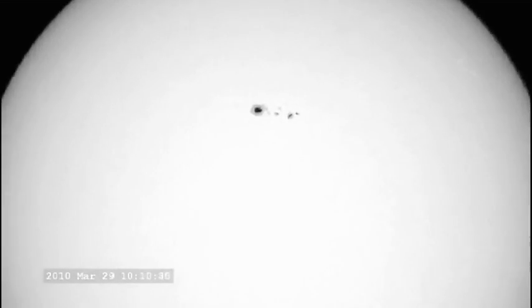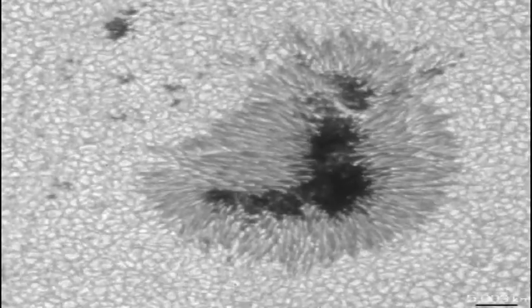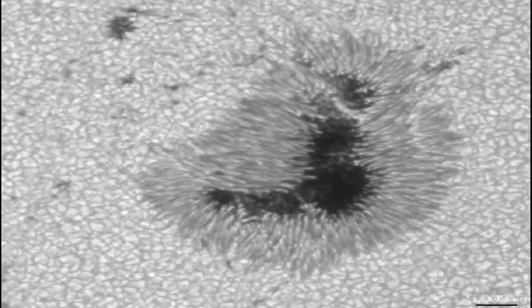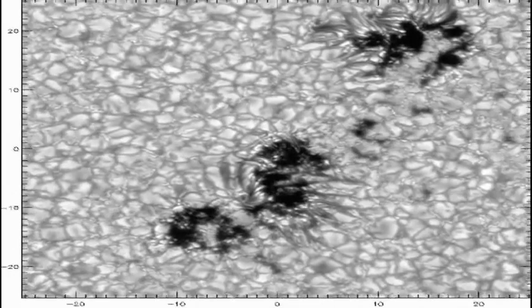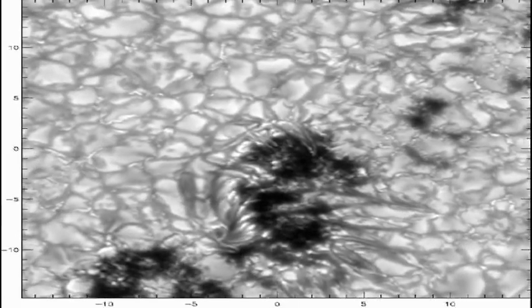Sunspots are areas of intense magnetic fields that effectively create a cold spot on the sun. If you were to be able to cut out a sunspot and put it in the sky, it would have the same brightness as the full moon. It's just that relative to the surrounding surface, they appear dark.